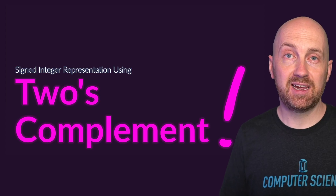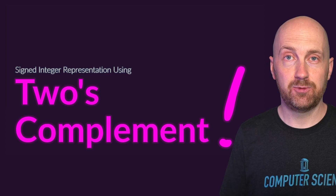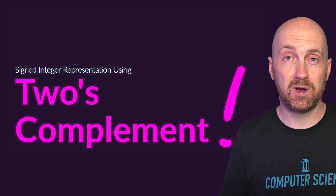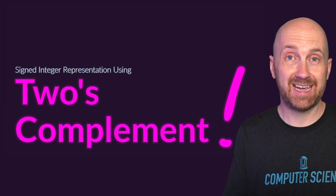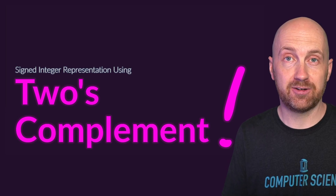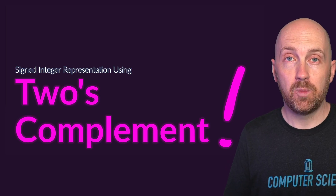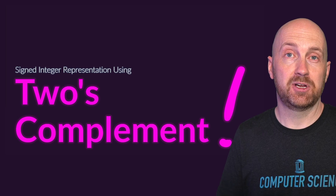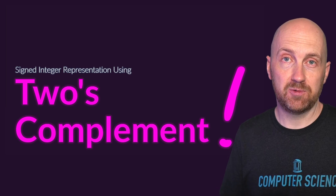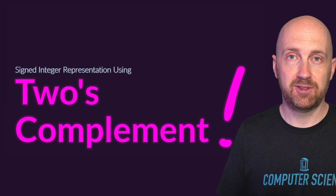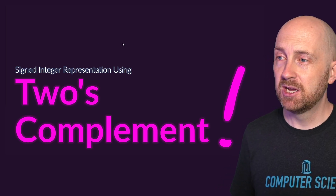How do you represent signed integer values in binary, where you only have zeros and ones and there is no negative symbol that you can use as part of your character set? Well, the world has effectively settled on two's complement, which is a very clever solution to this problem. So let's take a look.